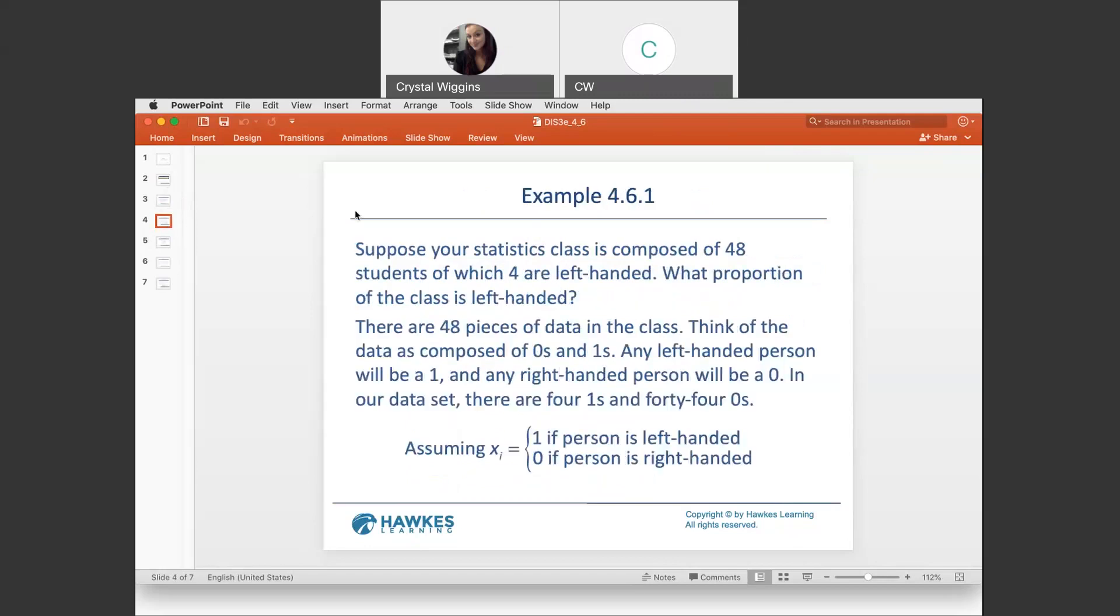So, for example, suppose your statistics class is composed of 48 students, you have 4 that are left-handed, and you are curious about what is the proportion of students in the class that are left-handed. You can actually just skip over these zeros and ones. They're irrelevant to how to calculate this. We already have all the information we need to know.